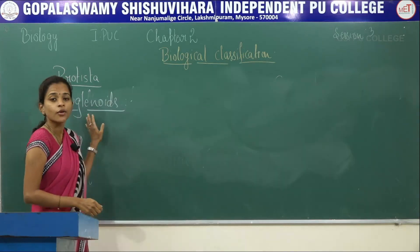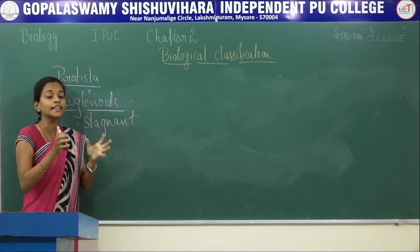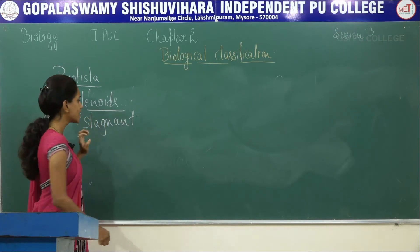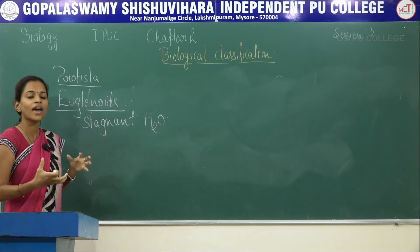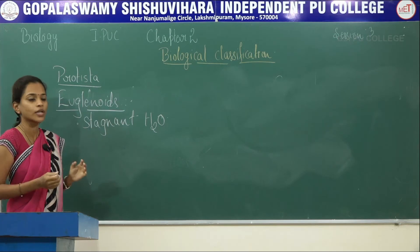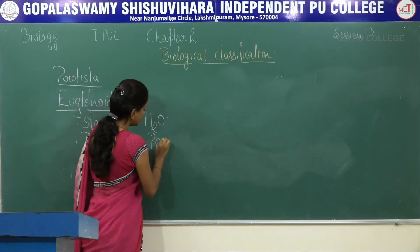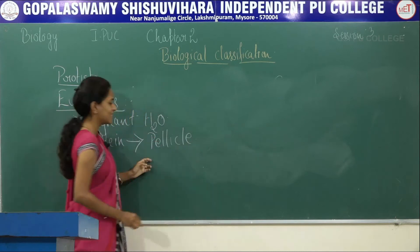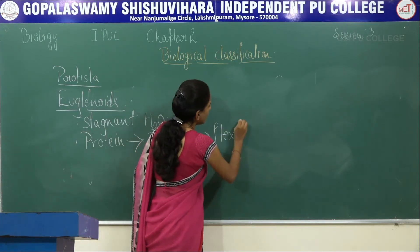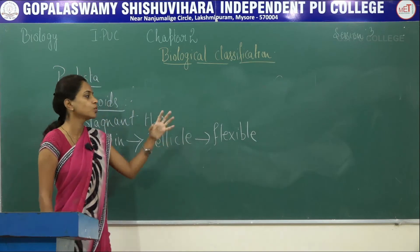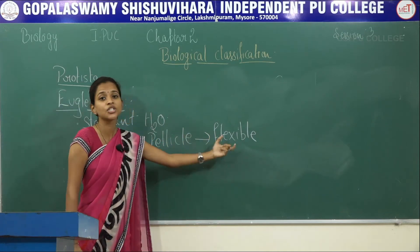Third is euglenoids. Euglenoids are restricted to stagnant water. Here, they do not have a proper cell wall; instead, they have a protective layer made up of protein called pellicel. This proteinaceous cell wall — pellicel — is much more flexible compared to the cellulosic or silica cell walls.